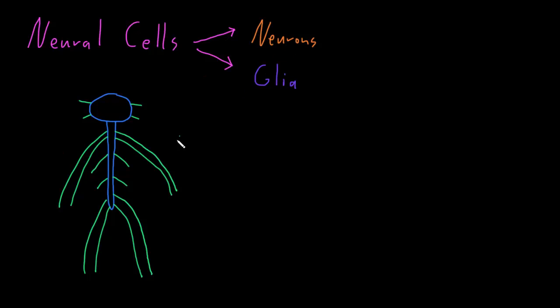Calling neurons nerve cells is a little problematic, because these structures in the peripheral nervous system called nerves are made up of neurons, but they also contain glial cells and a number of other cells that aren't neural cells at all. However, you'll often hear people refer to neurons as nerve cells because that was the traditional name for them. Neurons are found both in the central nervous system and the peripheral nervous system.